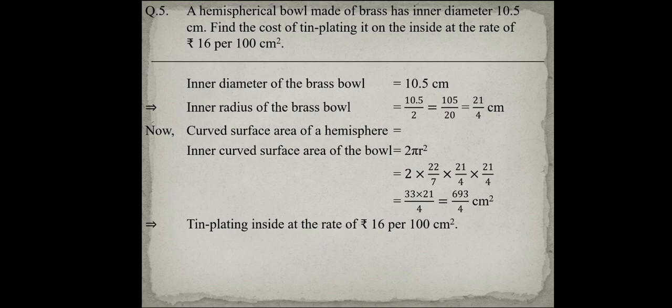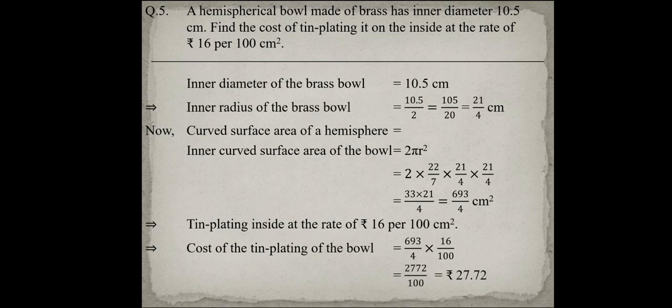The cost equals the curved surface area multiplied by the rate: 693 upon 4 into 16 upon 100, because the rate is Rs 16 per 100 cm². This is equal to Rs 27.72. So the cost of tin plating the inside of the brass bowl is Rs 27.72.